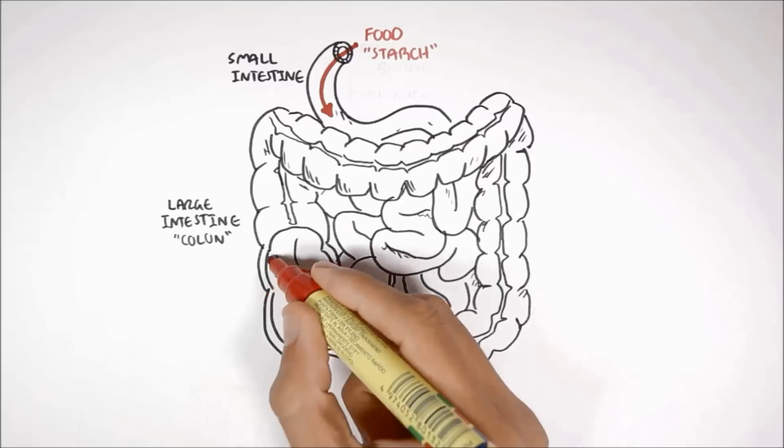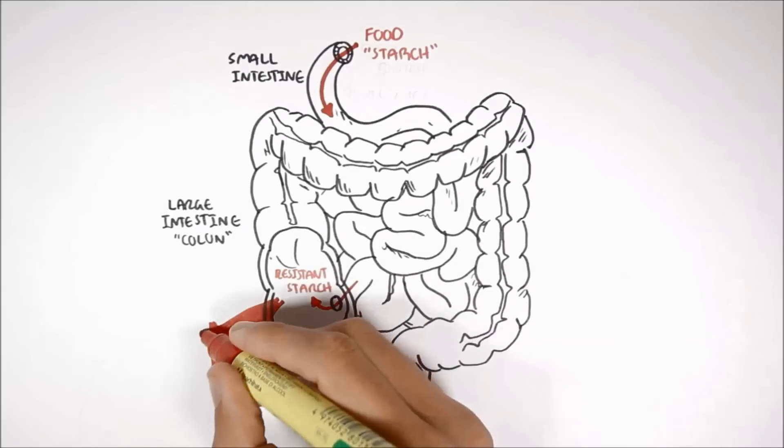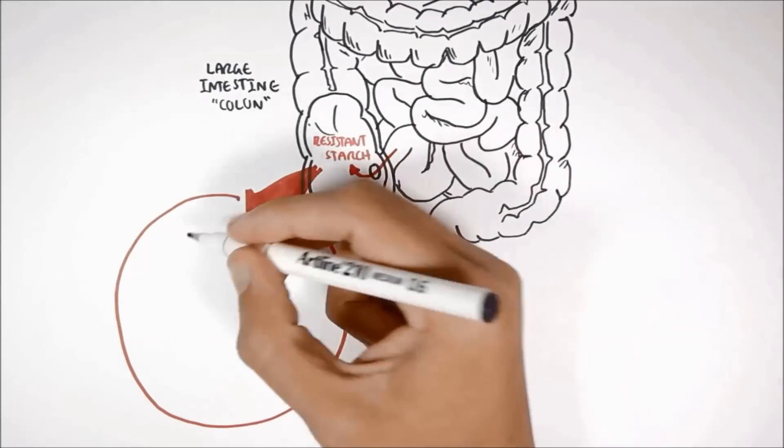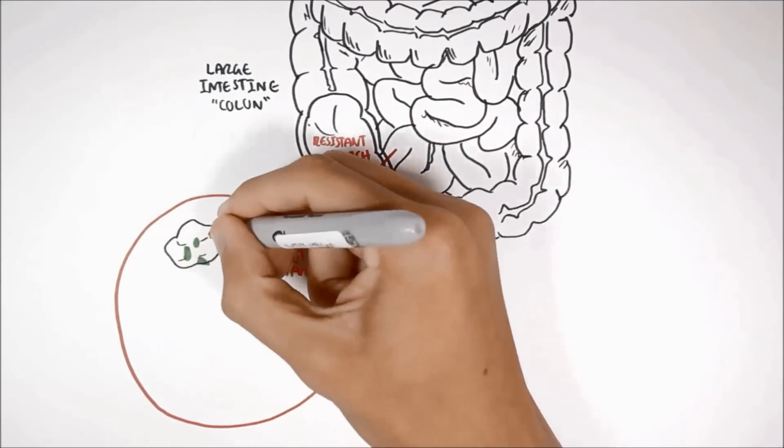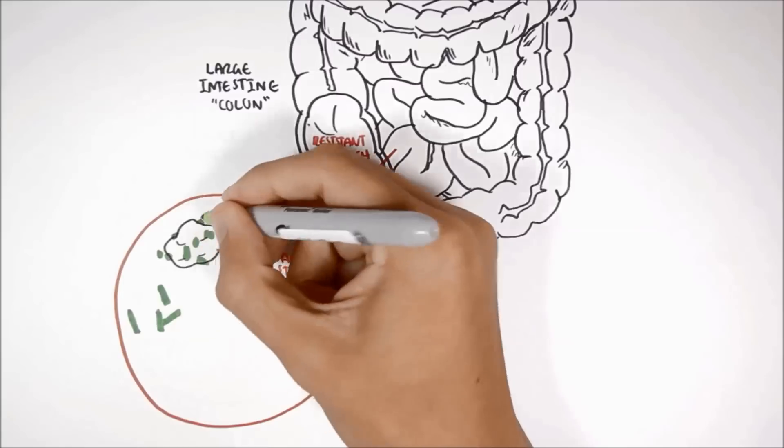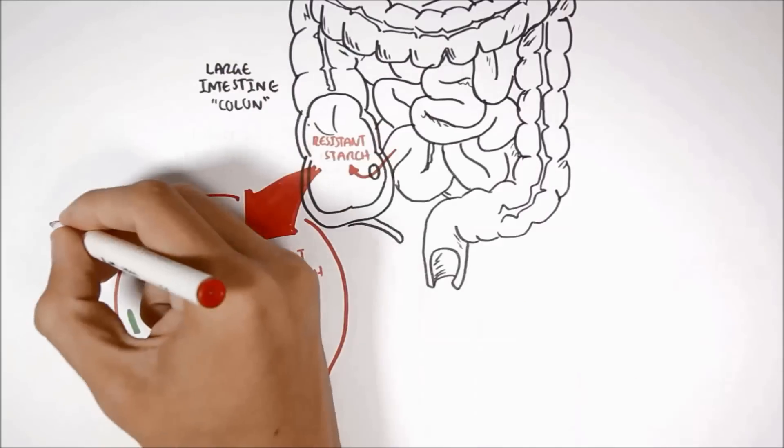However, resistant starch still contains energy that our body needs. And so, once resistant starch reaches the colon, the resistant starch will undergo fermentation by the trillions of bacteria that live there.